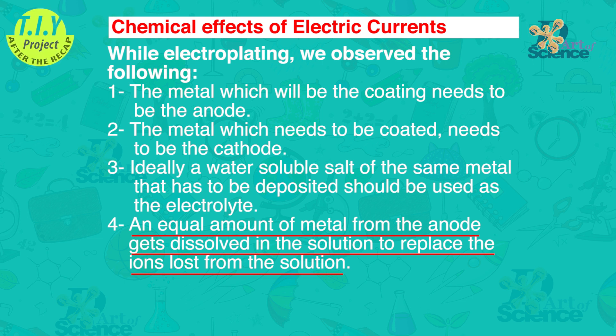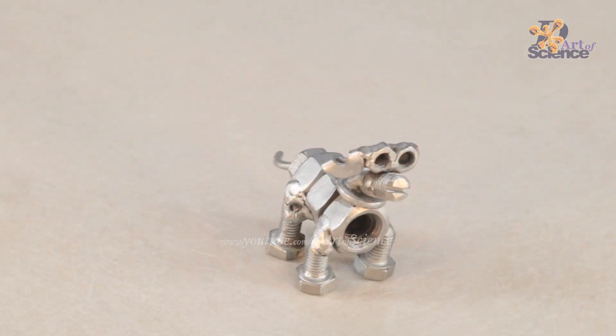An equal amount of metal from the anode gets dissolved in the solution to replace the ions lost from the solution. In this TIY for electroplating, I will copper plate a dog. Not a real one. This one.